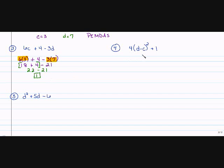The next one. Number 4. 4 times the square of D minus C plus 1. I'm going to highlight what I'm going to solve first, and that's inside my parentheses. I need to substitute 4 times my D is 7 minus my C is 3 squared plus 1. So I'm going to solve 7 minus 3 first.